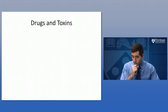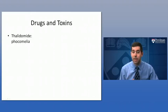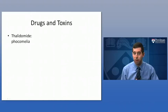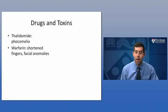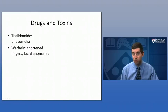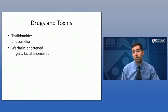Regarding drugs and toxins: thalidomide can cause phocomelia. Warfarin, often used after surgeries as an anti-blood-clotting agent to prevent clots during immobilization, can cause significant limb deformations including shortened fingers and facial anomalies. While warfarin has clear advantages in preventing blood clots, taken during pregnancy it can cause significant birth defects.